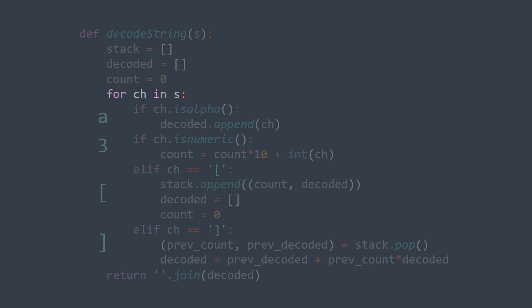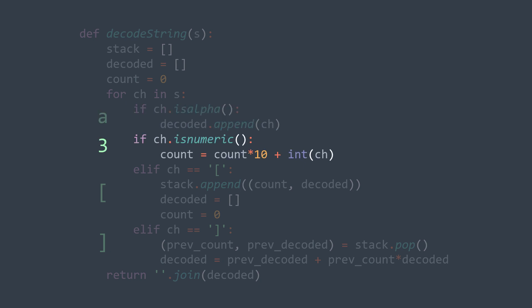When it's a letter, we just add it to our decoded string. When it's a digit, we insert it into the integer count by multiplying count by 10 and adding the digit. For example, if we have 254 in the string, it is read digit by digit: we get 0, then 2, then 25, then 254.